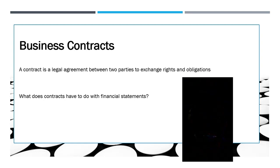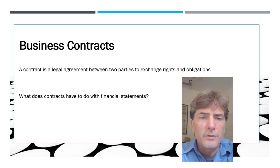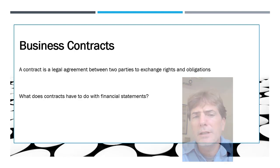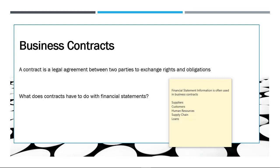The question then comes up: what do contracts have to do with financial statements? The focus of this course is financial statement analysis, so what is the connection to business contracts? Well, financial statement information is often used in business contracts. Suppliers want to know if who they sell to is going to be able to pay them, so they look at financial statements. A customer with a 20-year warranty wants to make sure the company they're buying from is going to be around for 20 years.